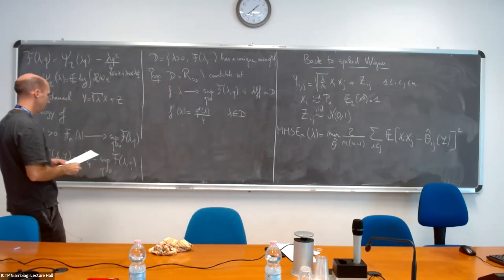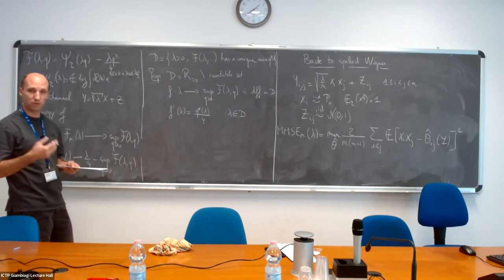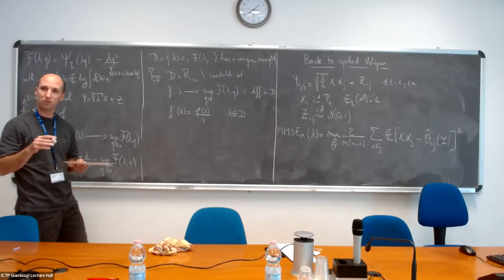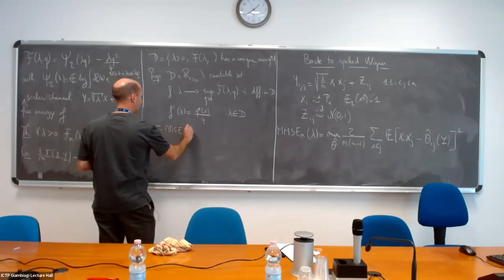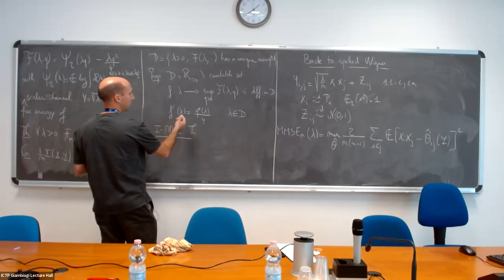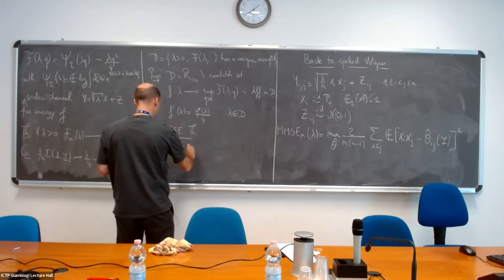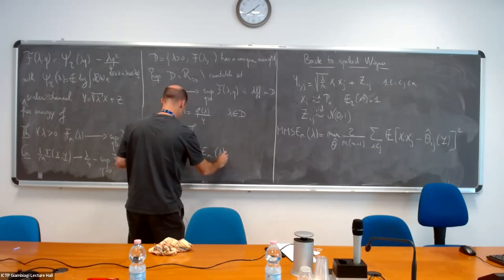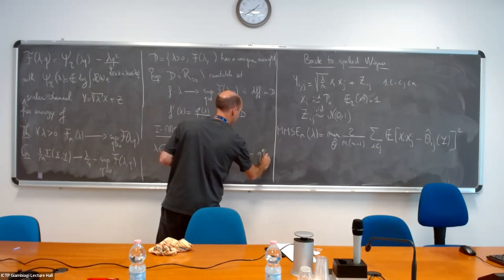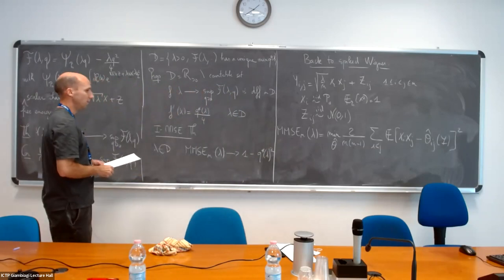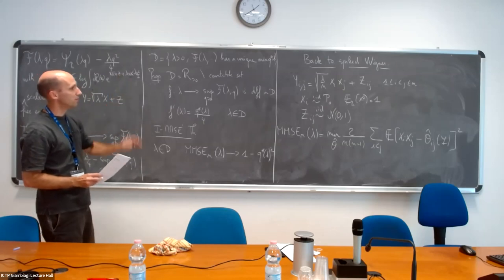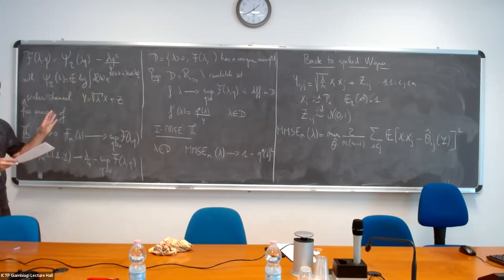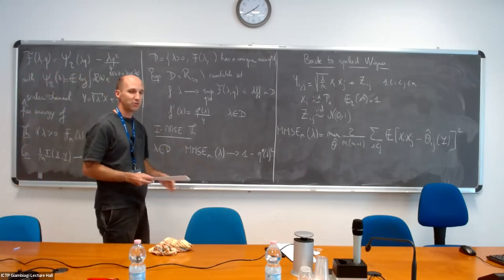You have an explicit formula for the derivative — that follows from the non-increasing convex property we saw, so you cannot be very bad. Now you apply the I-MMSE theorem and you get, for lambda belonging to D, the explicit MMSE formula. This is a direct consequence of what we saw before — you have a self-contained result where everything is written: the model, the solution, and the limit for the MMSE.